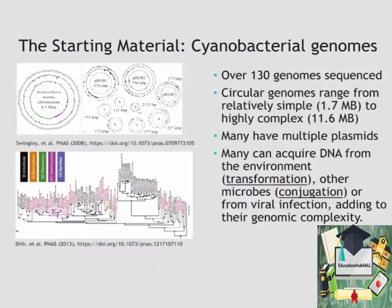The starting material is that we need to know something about the genomes of our cyanobacteria. Fortunately, over 130 genomes have been sequenced at this time. You can see the tree of those sequenced genomes on the bottom figure — they're quite diverse, and the color schemes describe quite different morphologies such as filaments and unicellular forms.